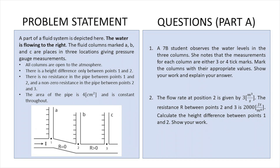So this is the problem we're going to be solving. This problem has a Part A and a Part B — I'm showing Part A on screen now and will show Part B when we get there. A part of a fluid system is depicted here; the water is flowing to the right. The fluid columns are marked A, B, and C and are placed in three locations giving pressure gauge measurements. All columns are open to the atmosphere. There is a height difference only between points 1 and 2, no resistance between points 1 and 2, but there is a resistance between 2 and 3. The area of the pipe is 4 centimeters squared and is constant throughout.